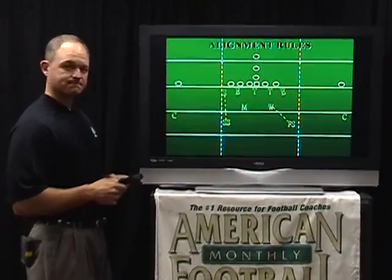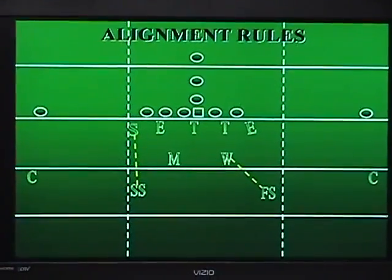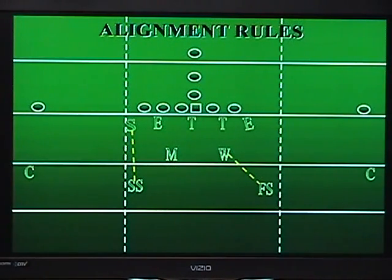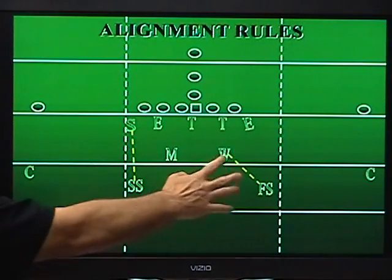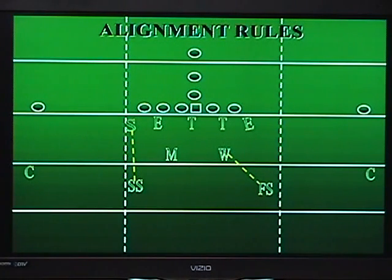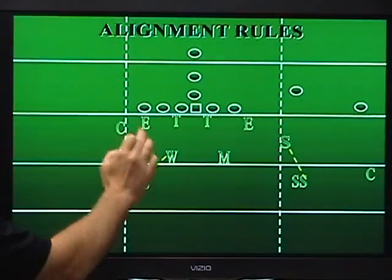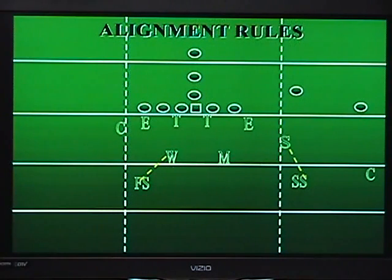Our alignment rules are this: the strong safety always goes with the SAM and the free safety always goes with the Willie. However you run your defense, it may be a different name for your personnel, but if you keep something like this attached and tagged, then everything flows from here on out — no matter where you call the strength. Here we've called it left, and here we've called it right. Right here the tight end's left, and here the tight end's left, but we called the strength out of our under defense right. It doesn't change who goes with it — a strong safety is still going to go with the SAM and the free safety is still going to go with the Willie. But now we've changed our front and our blitz capabilities off of it.